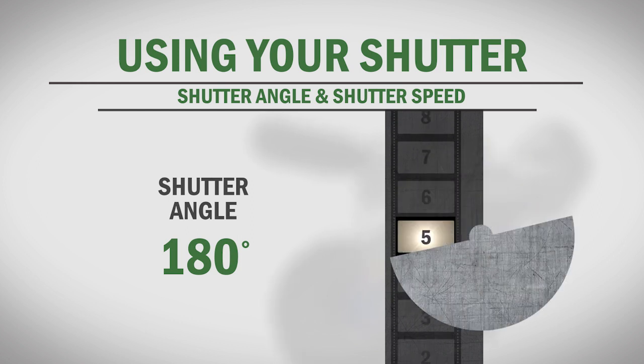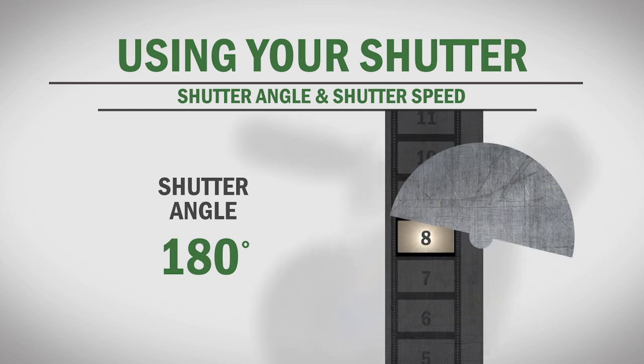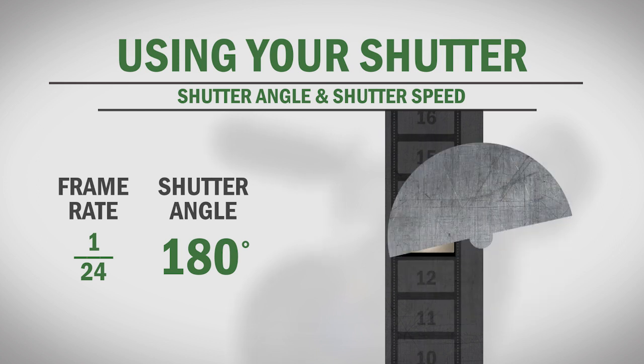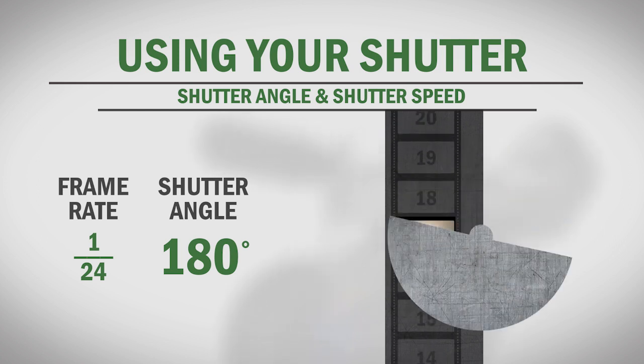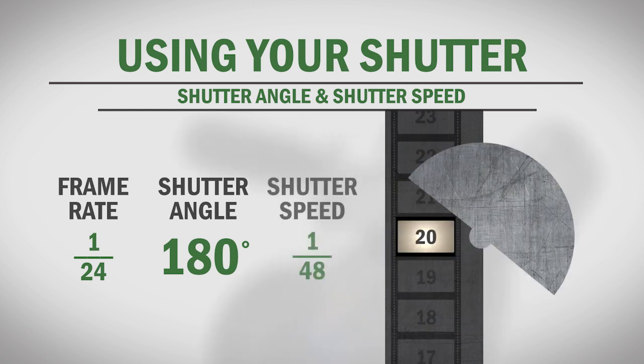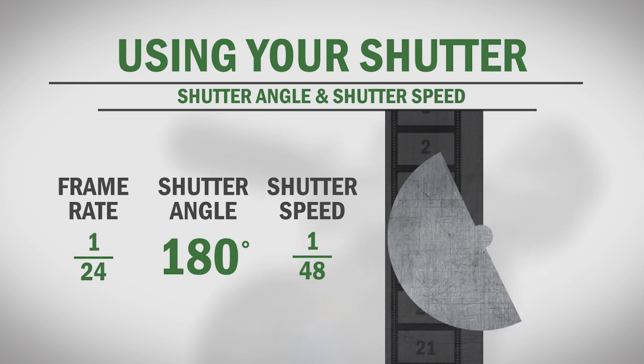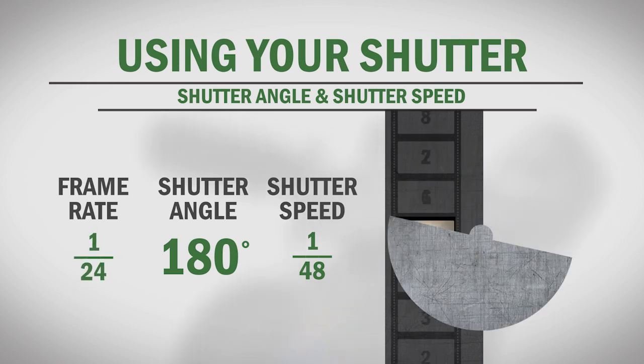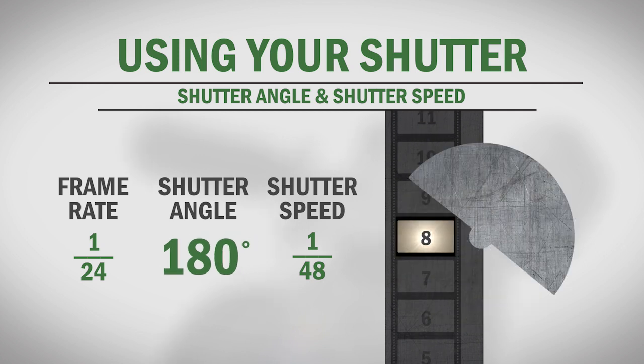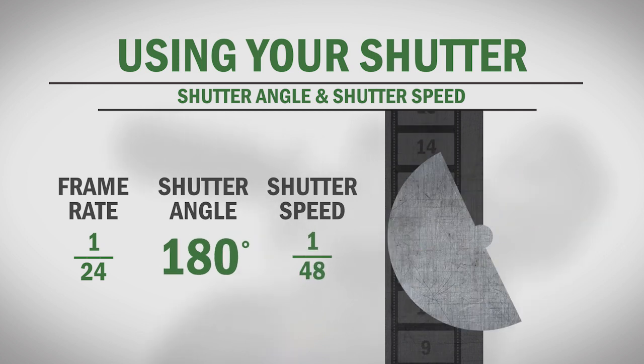Shutter speed is basically the electronic equivalent to shutter angle. Rather than being measured in degrees, it's measured by fractions of a second. Let's look at our 180-degree shutter angle. We have frames advancing every 1/24th of a second, but each single frame is only being exposed for half of that time, or 1/48th of a second. So if you're shooting at 24 frames per second, the equivalent shutter speed of a 180-degree shutter angle is 1/48th of a second.